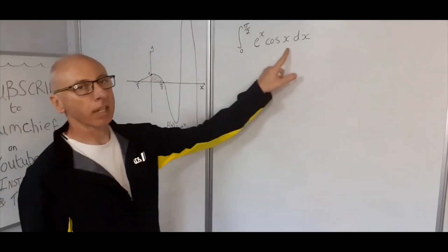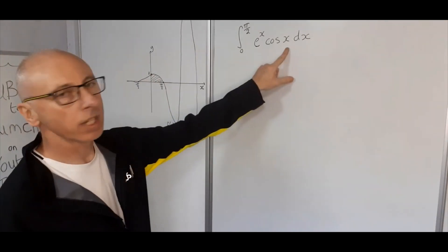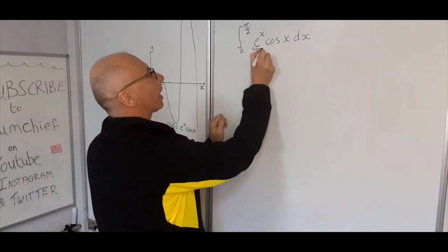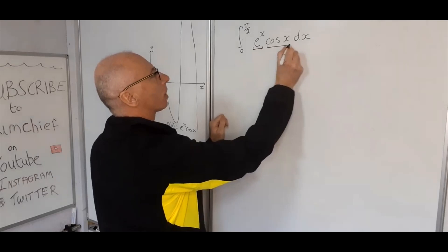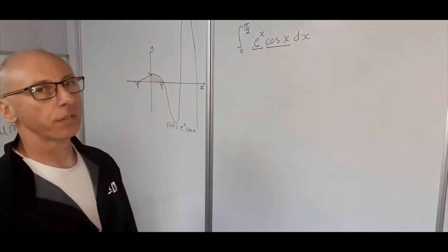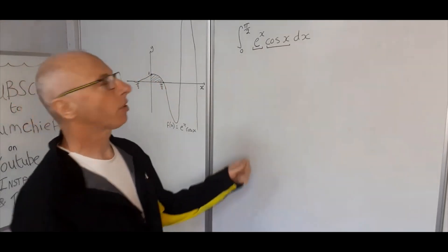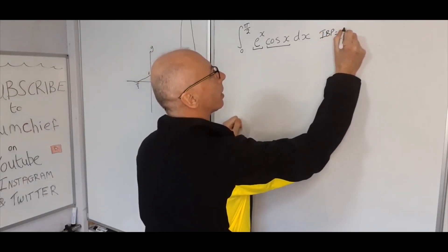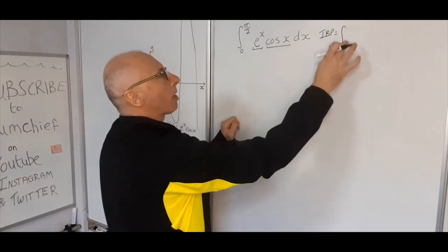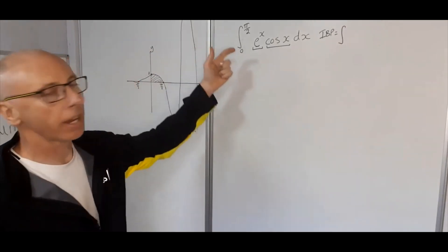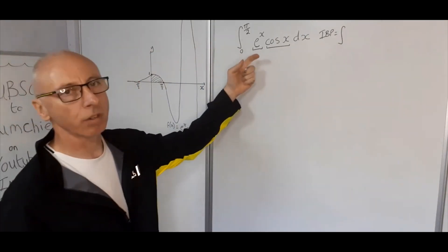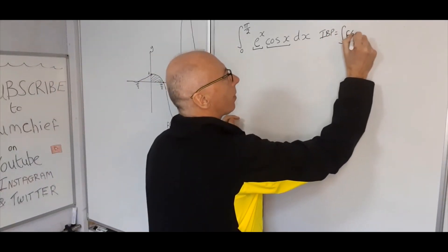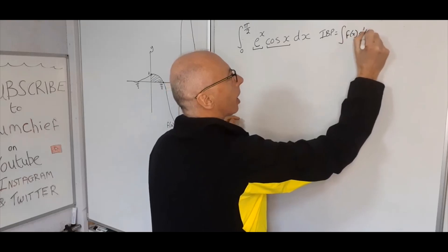So e to the x cosine x — we can see that integration by parts is going to be the way to go. We've got e to the x as one function and cosine of x as another function. The integration by parts formula — I'm not going to write the parameters in the formula because we can see what they are, and it applies whether you do an integration with or without parameters.